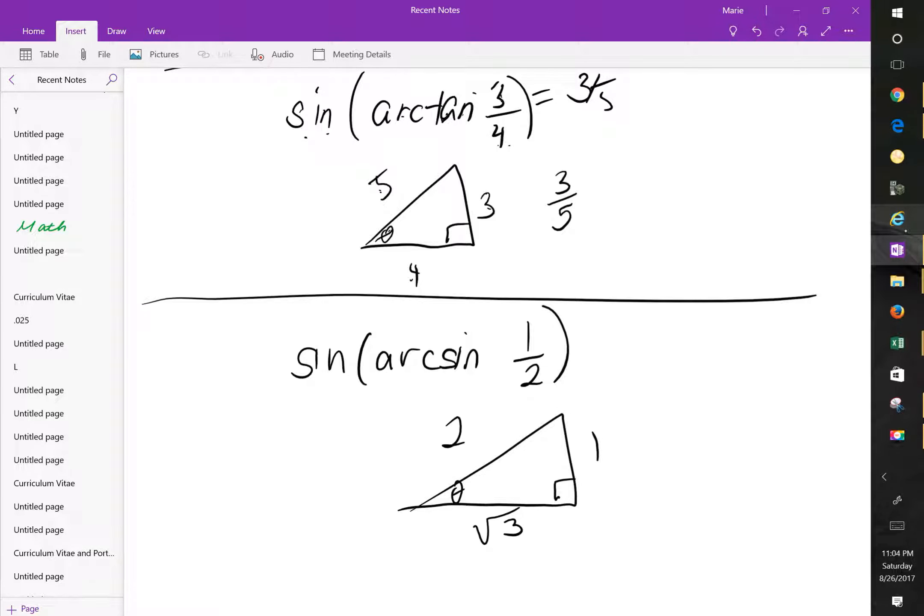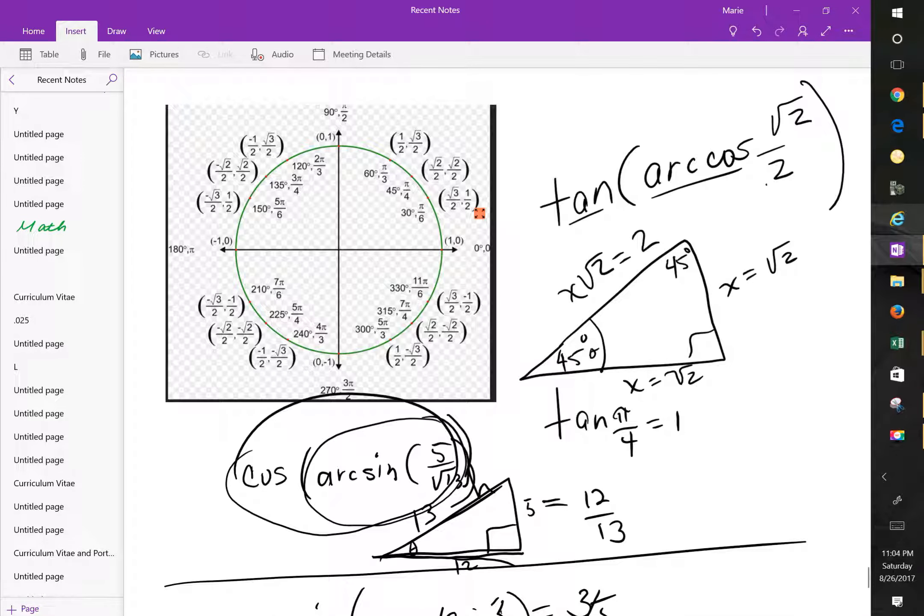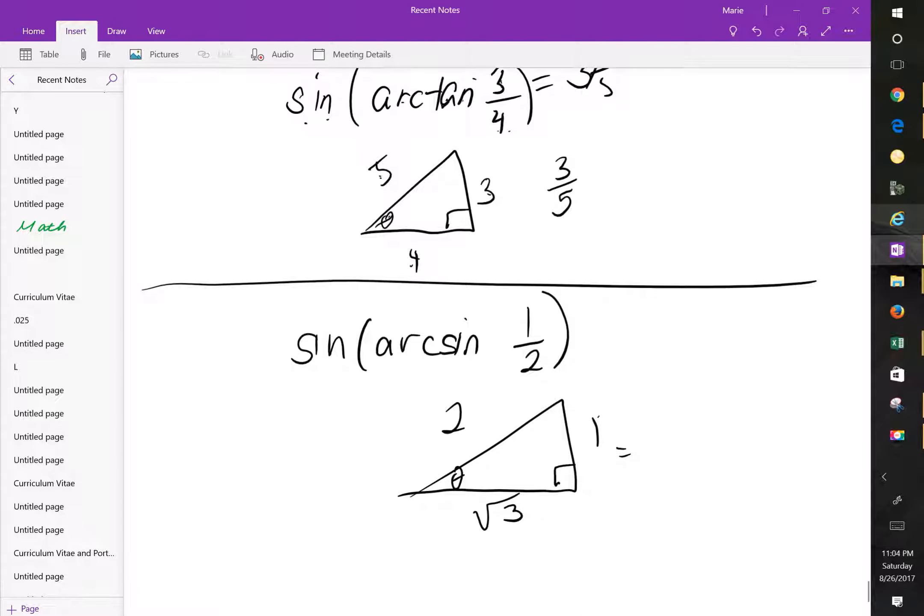So if I'm looking at the arc sine of 1 half, this is going to be the same. And again, we're going to go back to the trigonometric circle. Arc sine 1 half, I'm looking at pi over 6. Alright, so in this case, this is going to yield me sine pi over 6, which we know is 1 half, or 1 over 2.